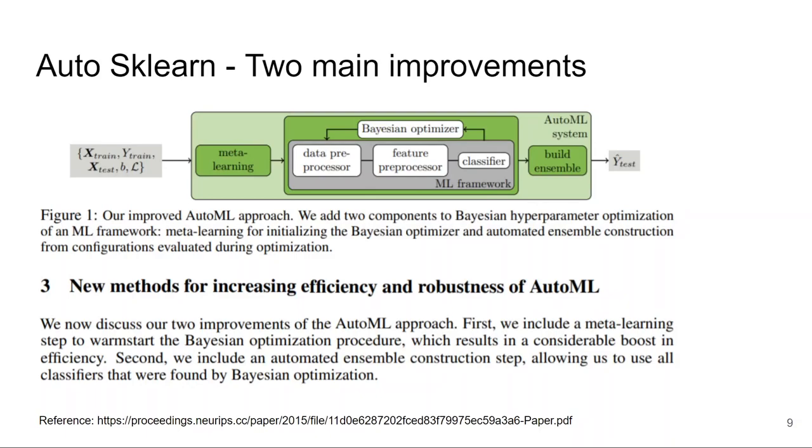When we initialize with a good set of parameters, then training will converge early. The second one is ensembling. They have included an automated ensemble construction step which allows us to use all classifiers that were found by Bayesian optimization. These are the two main improvements that they have discussed in the research paper.